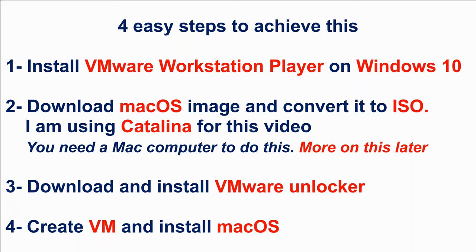Step one: install VMware Workstation Player on your Windows 10 PC. Step two: download the Mac OS image and convert it to ISO — I'll be using the Catalina image for this video. Note that you need a Mac computer to download the image. Step three: download and install VMware Unlocker. Step four: create the VM and install Mac OS on it.